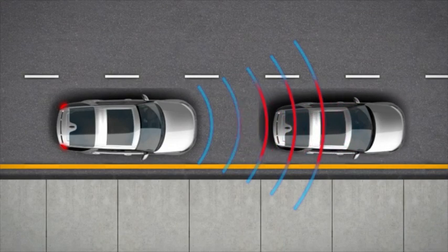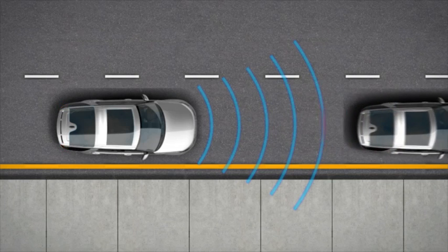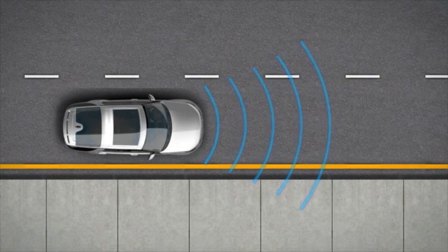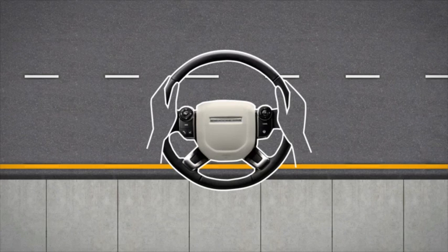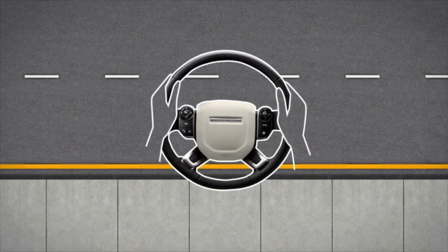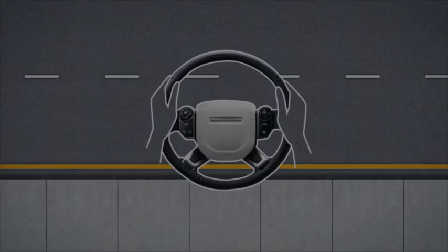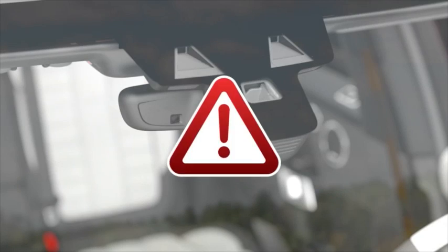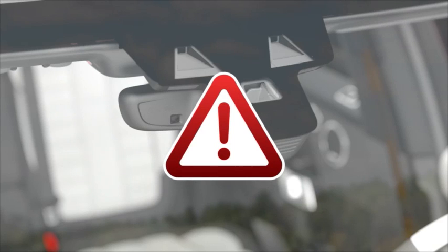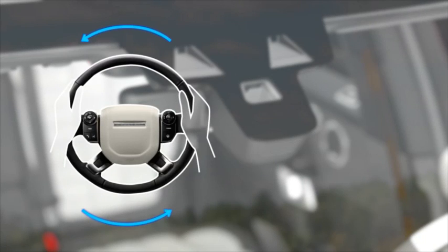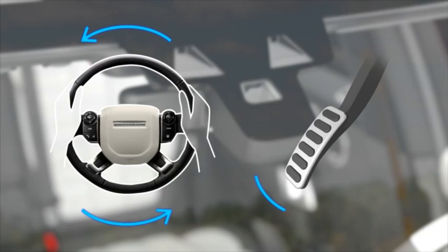After the vehicle has stopped, the brakes are only applied for a few seconds. After this period, you must resume full control of the vehicle. If AEB engages, you can override its operation by turning the steering wheel or pressing the accelerator pedal. The system then disengages.